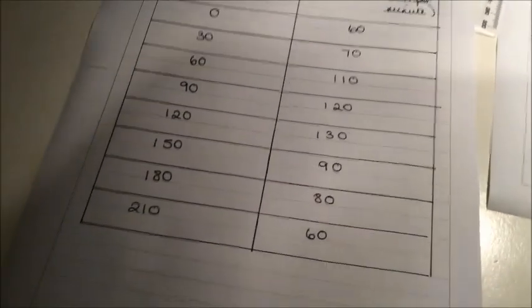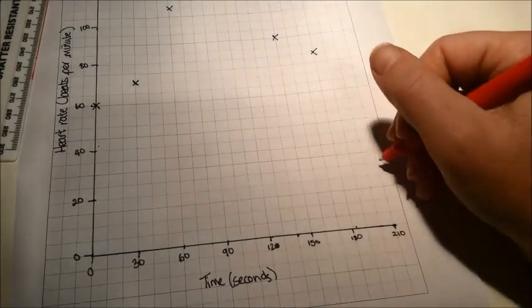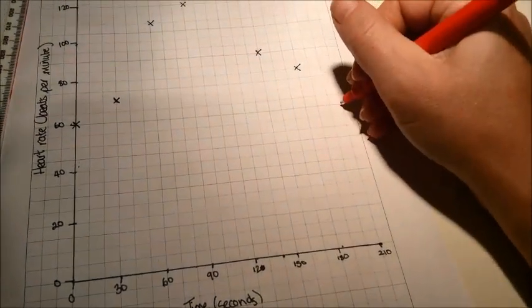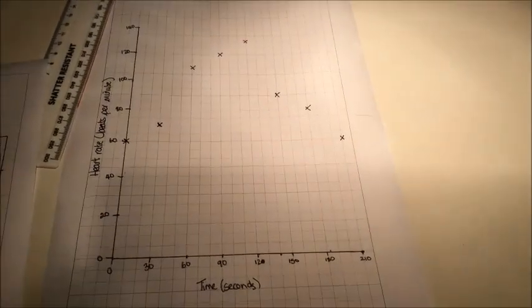And finally, at 210 seconds, my heart rate was 60 beats per minute. So there you go, there I have my line graph.